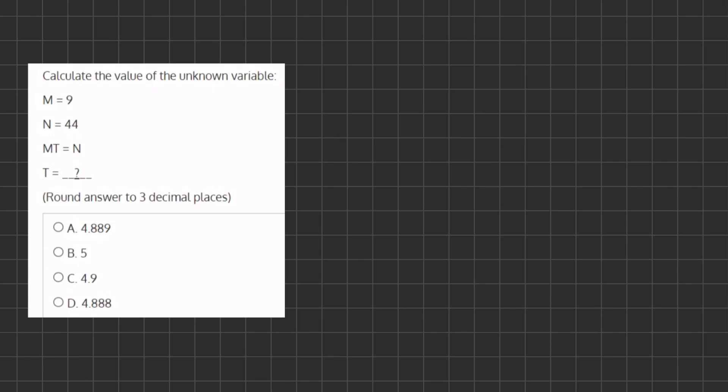All right, so in this problem, we want to calculate the value of the unknown variable t. We are given m equals 9 and n equals 44, and we are given this equation, so let's plug in what we have and isolate t.